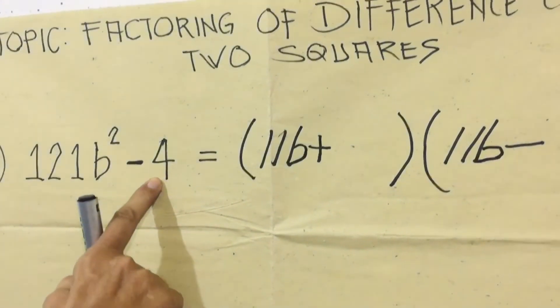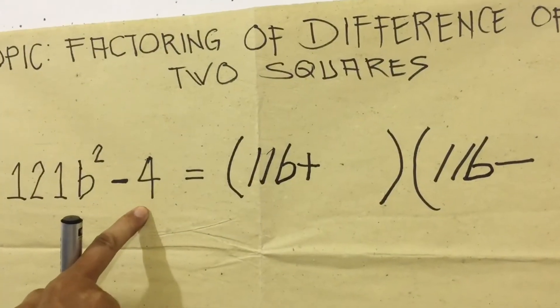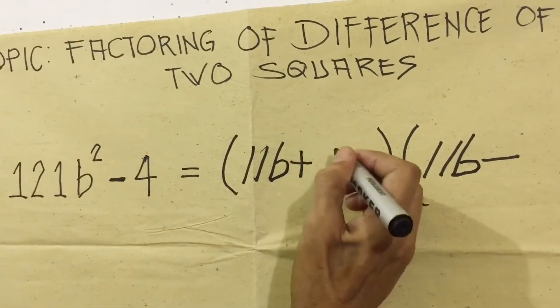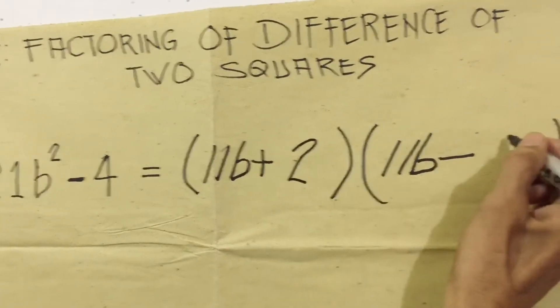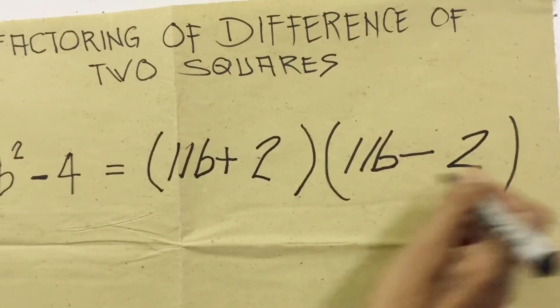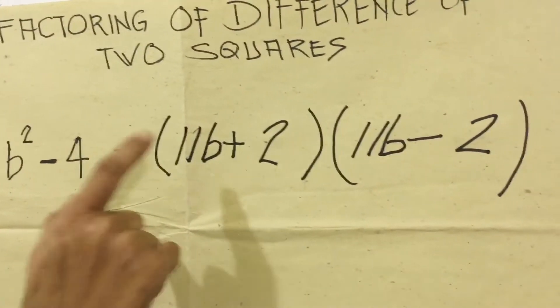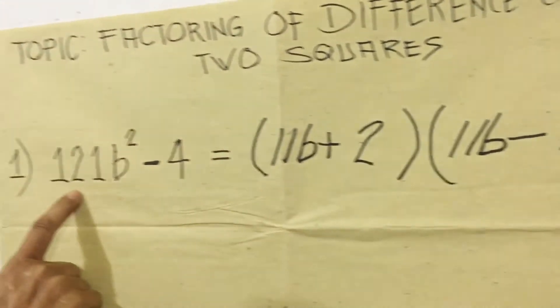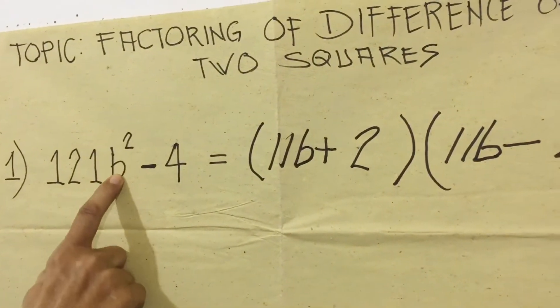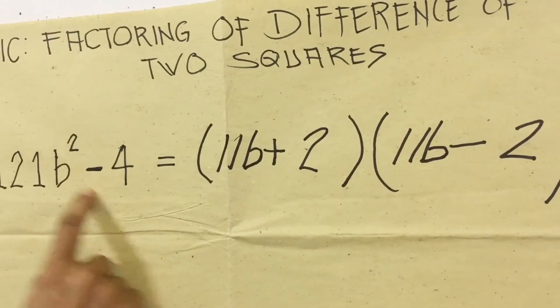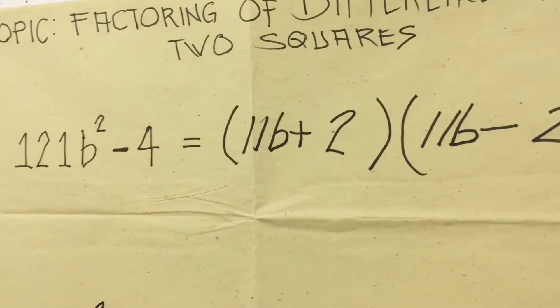And next, the factor of 4 is 2 times 2, so 2 here and 2. Ready to check? 11B times 11B equals 121B-squared. Then positive times negative equals negative. 2 times 2 equals 4.